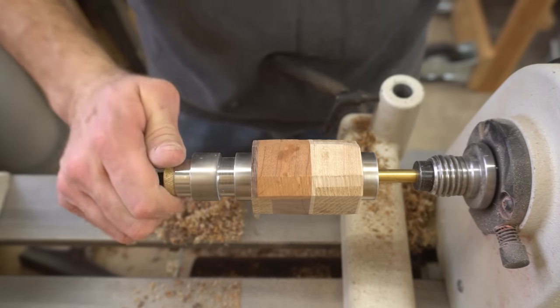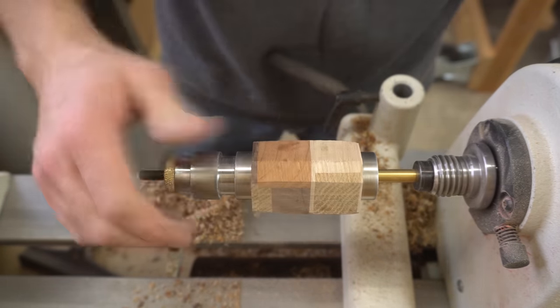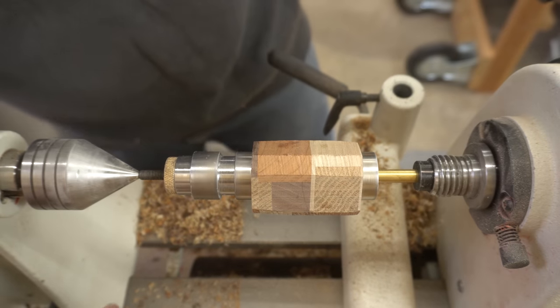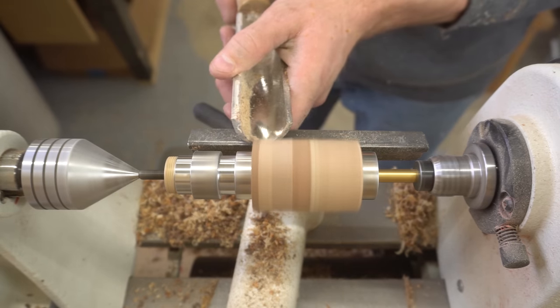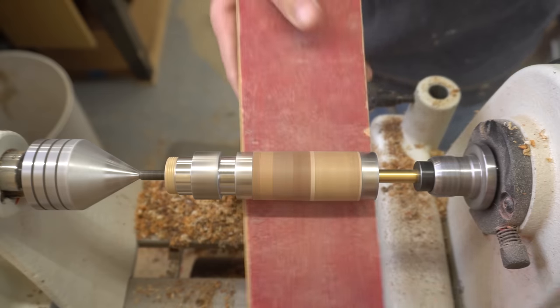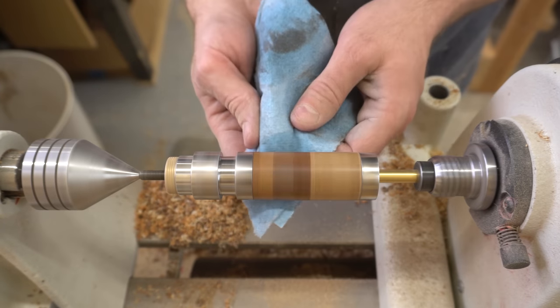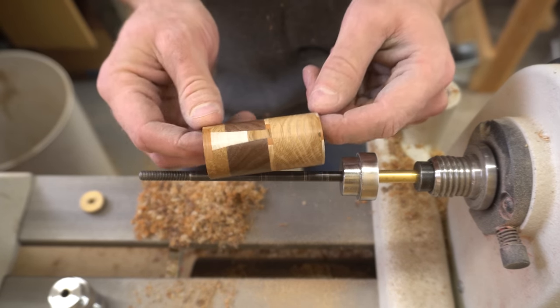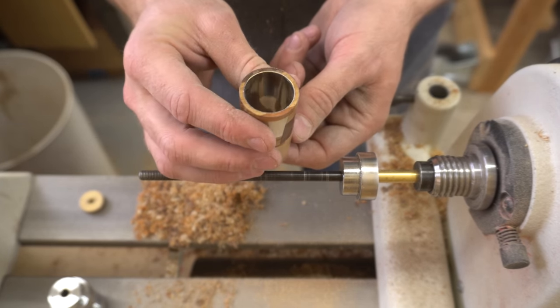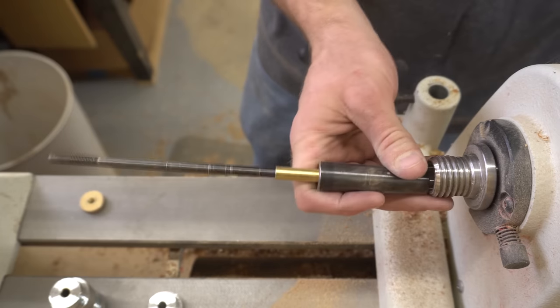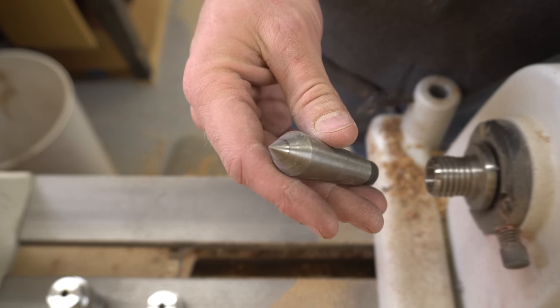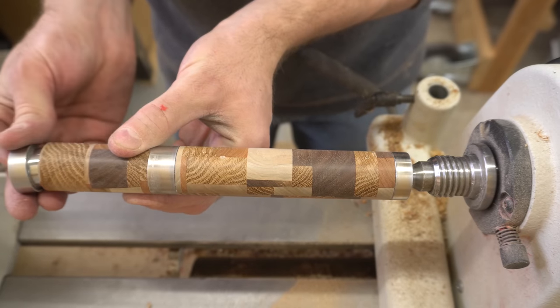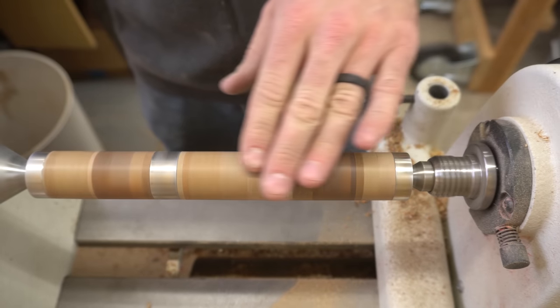Next I put the second blank on the mandrel and repeat the whole process. Because this piece is so much shorter, I had to put a bunch of spacers on the mandrel in order to tighten it down.